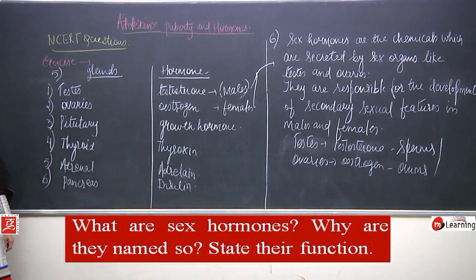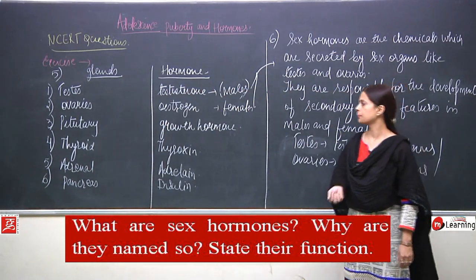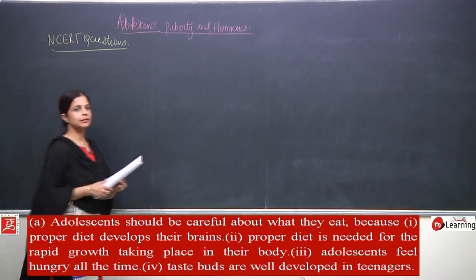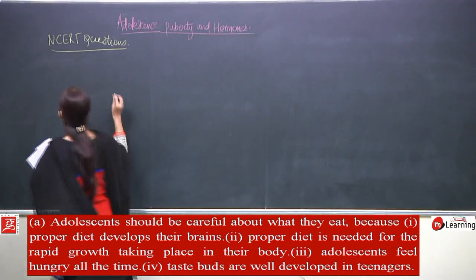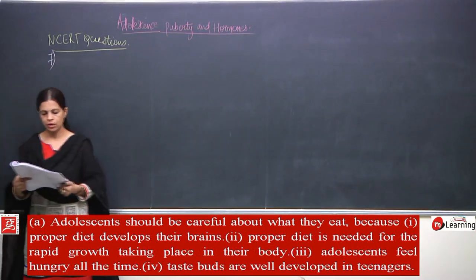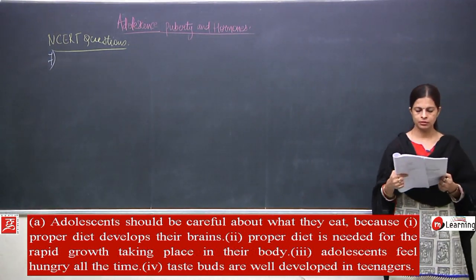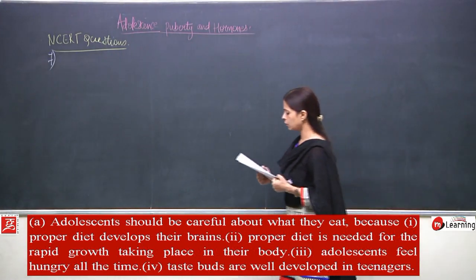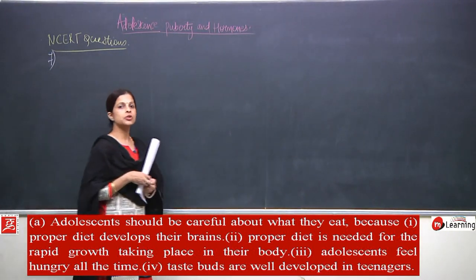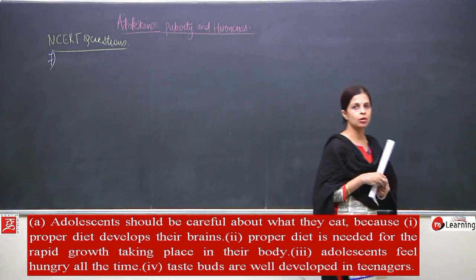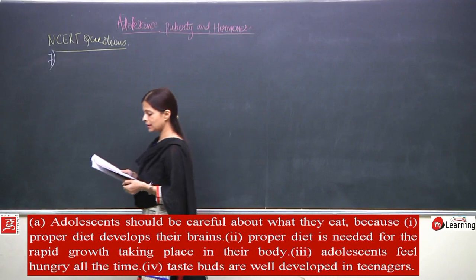Now we will be talking about the next question, which is question number seven. The question says: Choose the correct option. First option for part A: adolescents should be careful about what they eat because proper diet develops their brain. Second option: proper diet is needed for the rapid growth taking place in their body. Third option: adolescents feel hungry all the time. Fourth option: taste buds are well developed in teenagers.